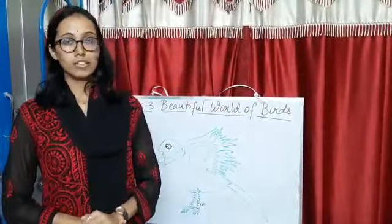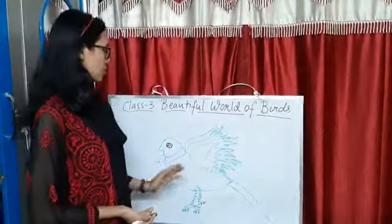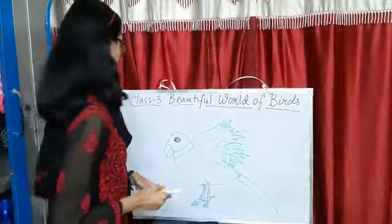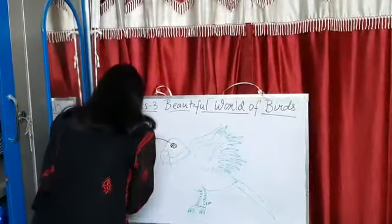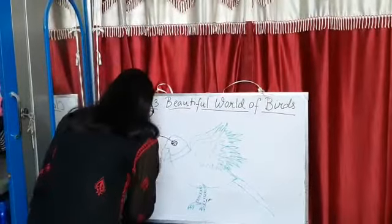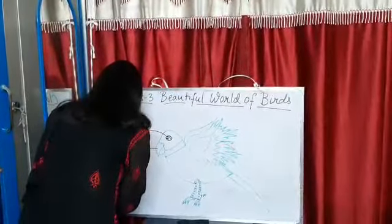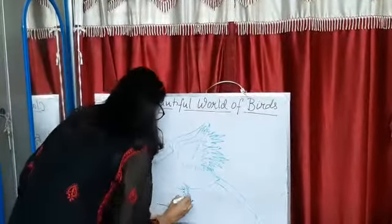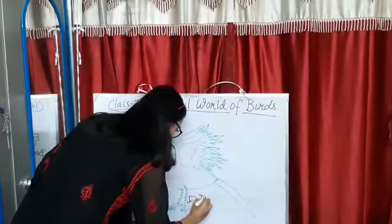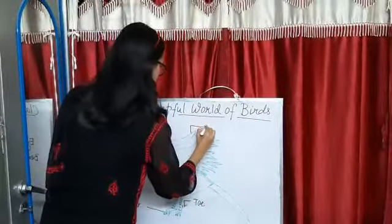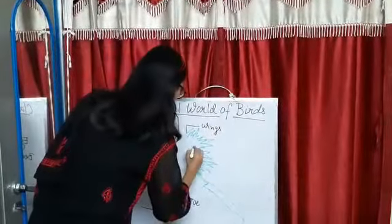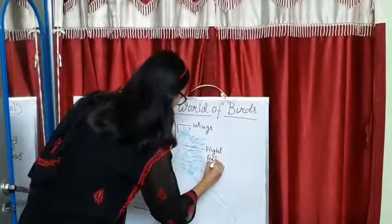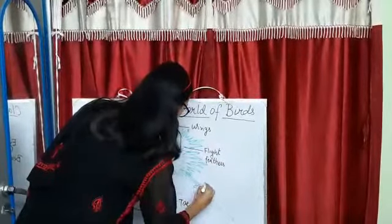First of all, we will learn the different parts of a bird's body. As you can see, I have drawn one bird, and let us learn the different parts. This is the eye, this is known as the beak, this is the claw, this is the toe, these are the wings, these are the flight feathers which help birds to fly, and this is the tail.